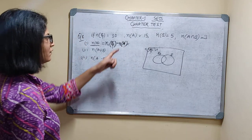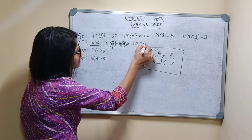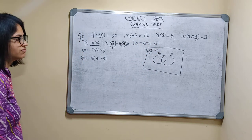So, n(ε) minus n(A'). You get 30 minus n(A') is equal to 15. It is 15.